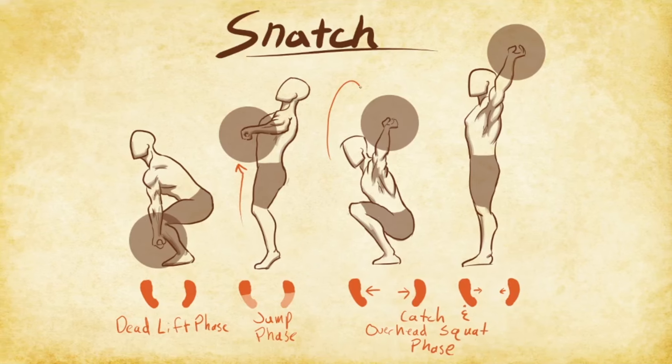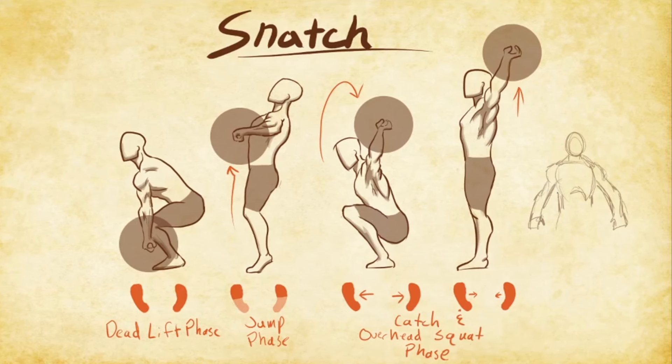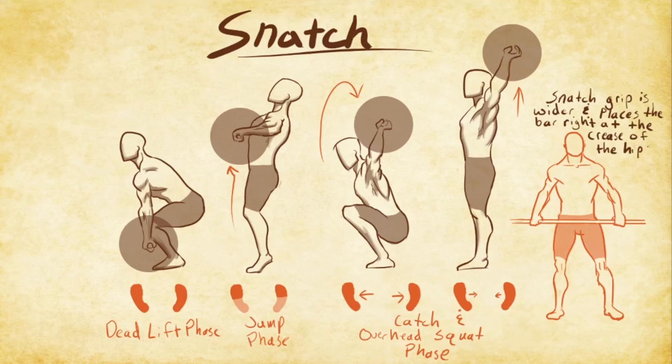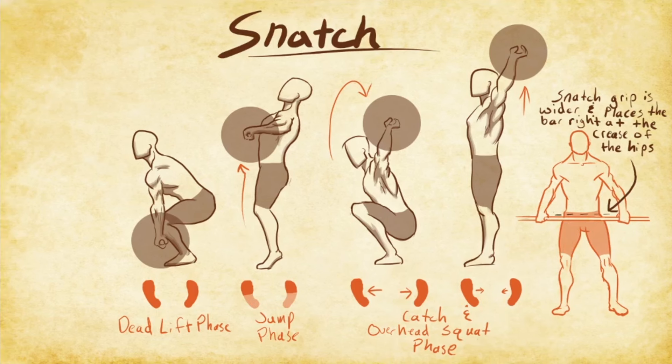Catching the weight in the deep overhead squat position is often the most difficult part of the movement because it requires a lot of strength and stability in a range of motion most people don't have even when they're not supporting weight. But overhead snatch grip squats are a great way to build up the strength and range of motion required for this particular part of the lift.